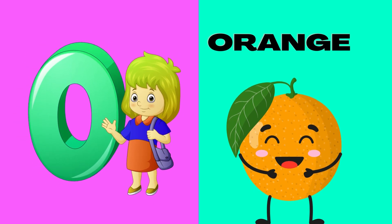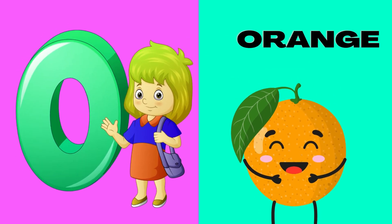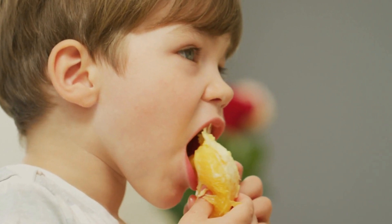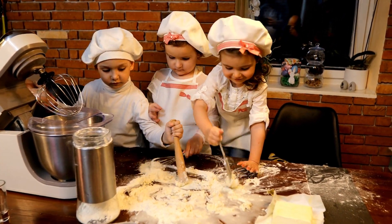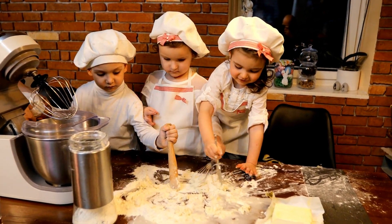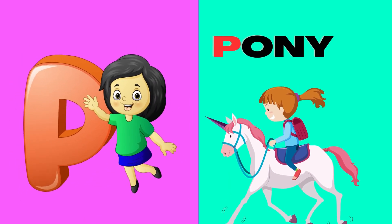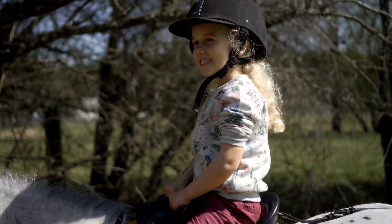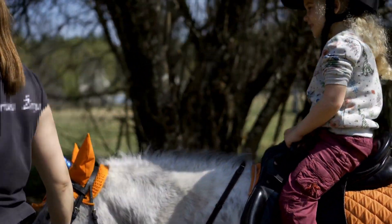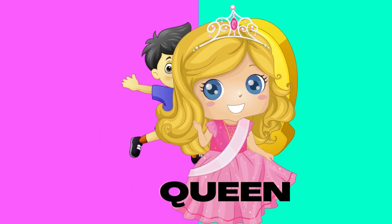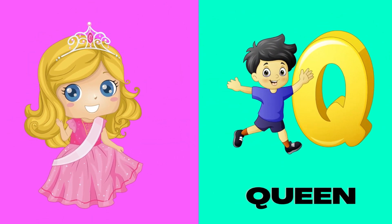O is for Orange. Orange, Orange, O-Orange. P is for Pony. P-P-Pony, P-Pony, P-Pony. Q is for Queen. Q-Queen, Q-Queen, Q-Queen.